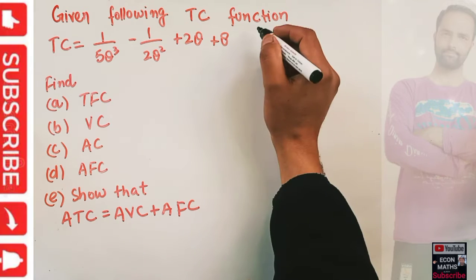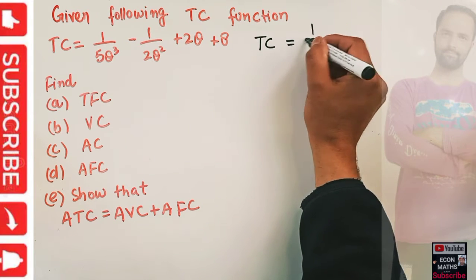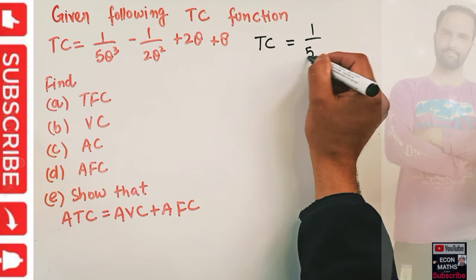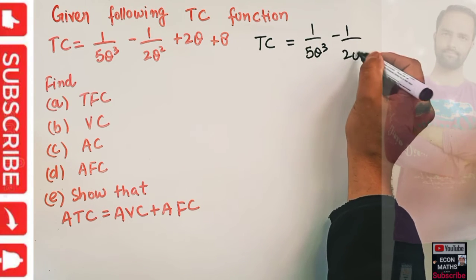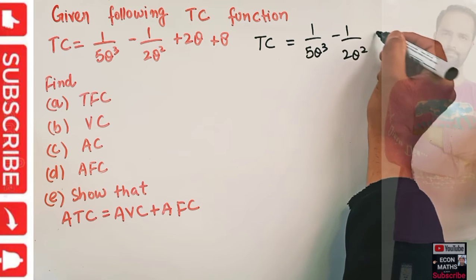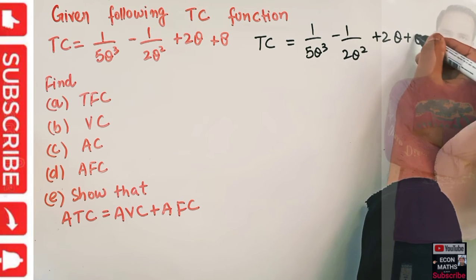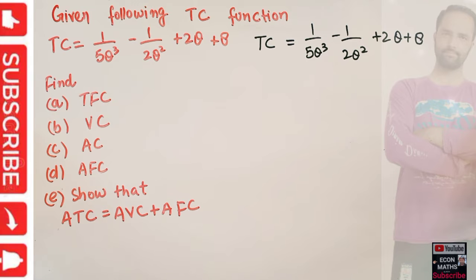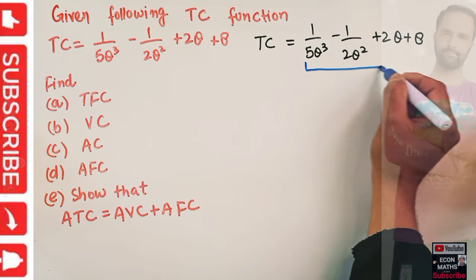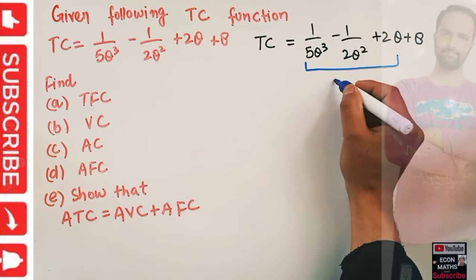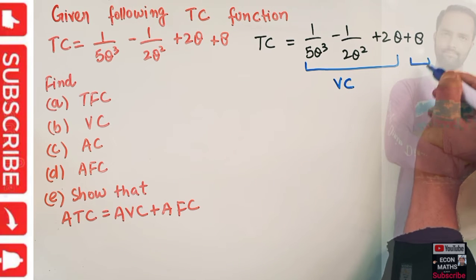So let's write our total cost function again. The total cost function is equal to 1/5 q³ − 1/2 q² + 2q + 8. Now here you can see these first three terms denote our variable cost, and this last term denotes the fixed cost.